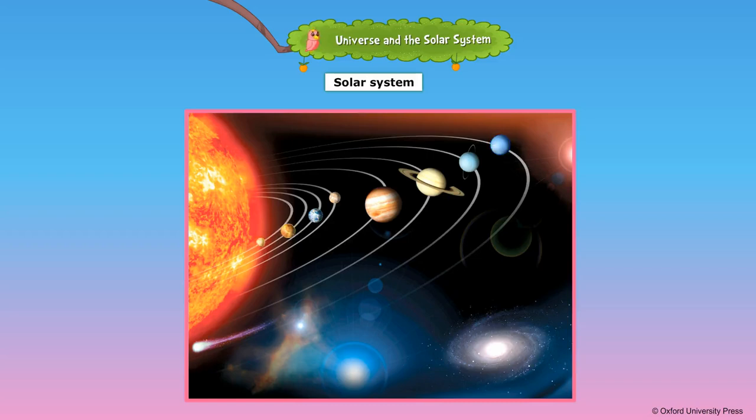Mercury and Venus, the planets nearest to the sun, are very hot and have no life. Earth is the third planet from the sun. It is a unique planet. It has air, water and a comfortable temperature for life.